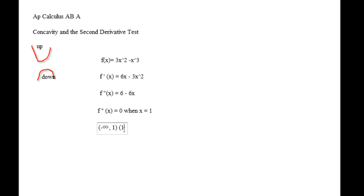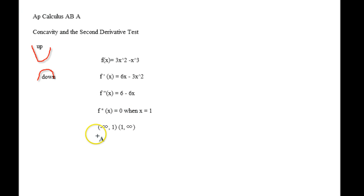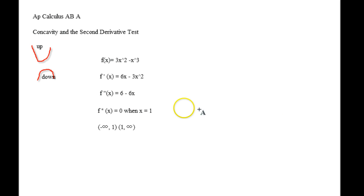So I'm going to be looking at the intervals: negative infinity to 1, and then 1 to infinity. If I find that when I plug numbers from an interval into the second derivative and I get a positive number, I'm dealing with concave up. If I get a negative number, that means concave down.